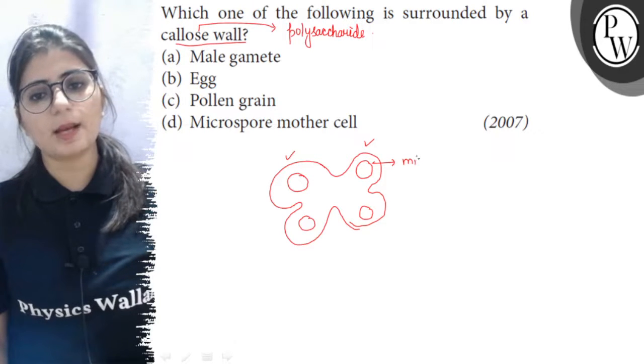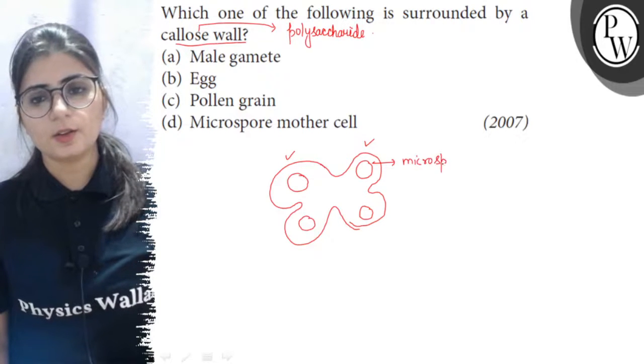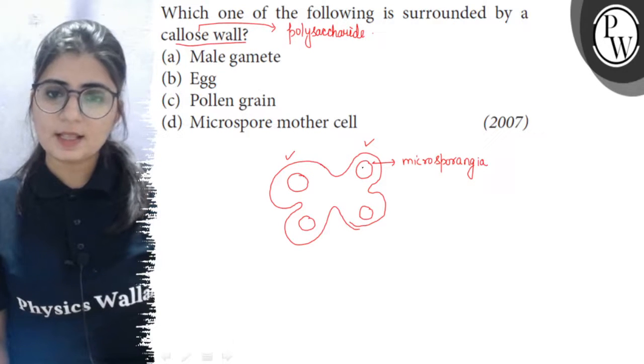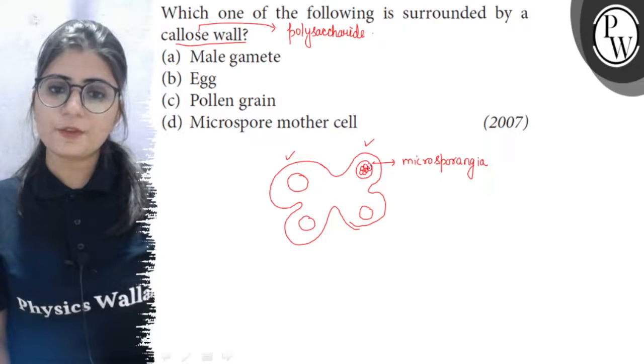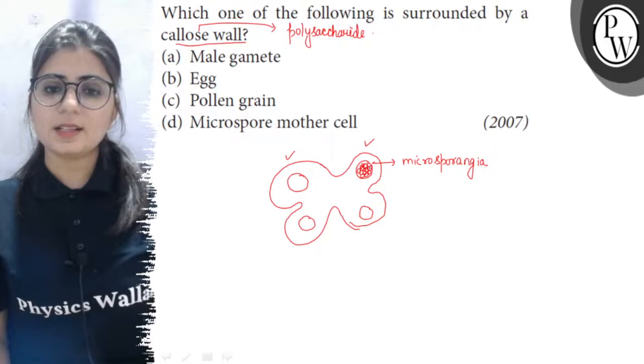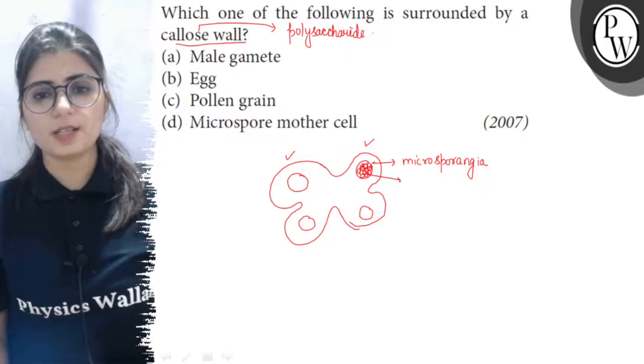So, these are microsporangia or the pouches where microspores are formed and inside these microsporangia, there is a group of cells and these cells are connected together by plasmodesmata to form a tissue.